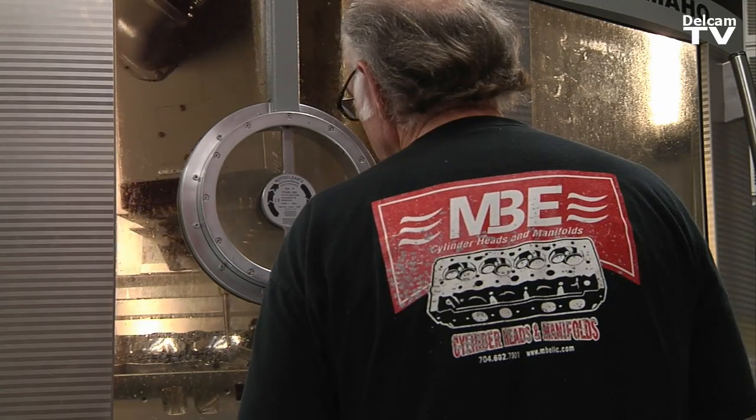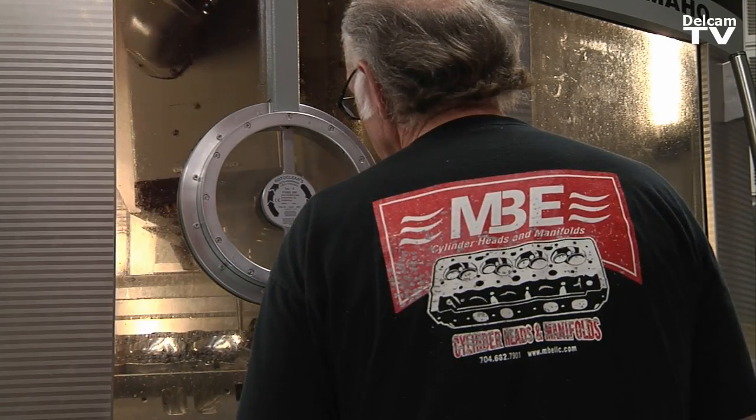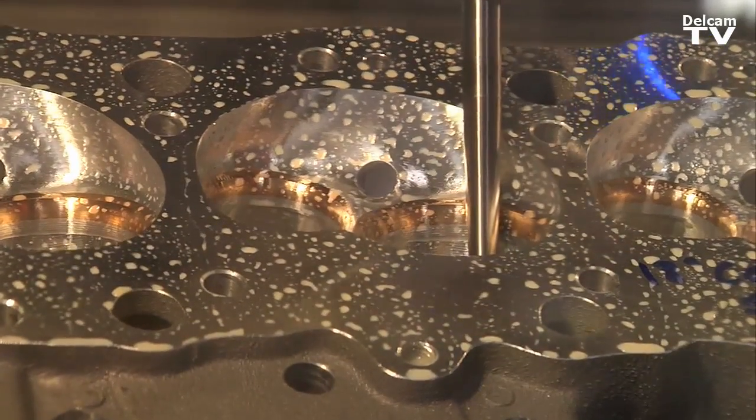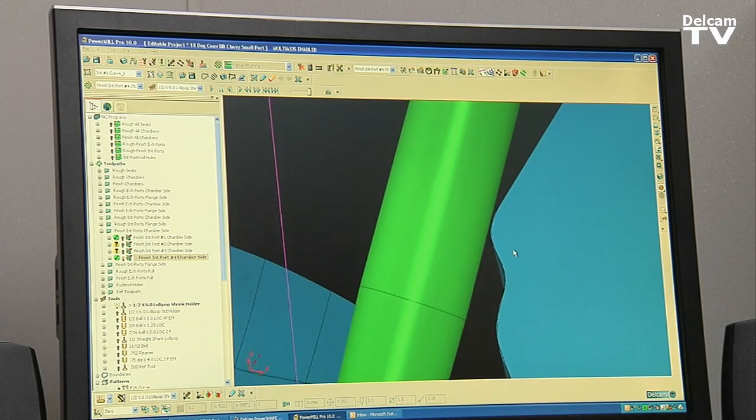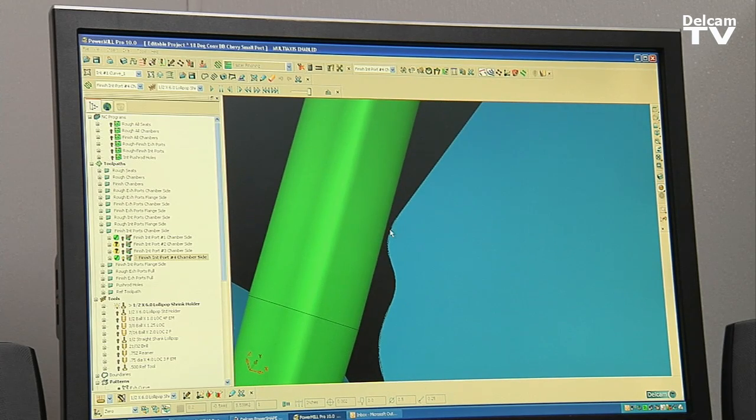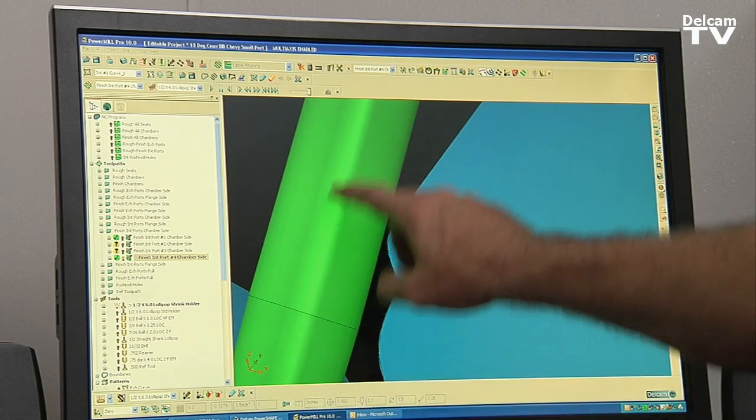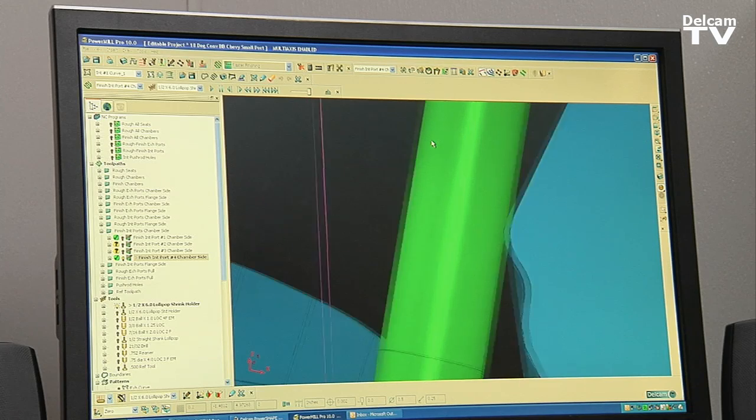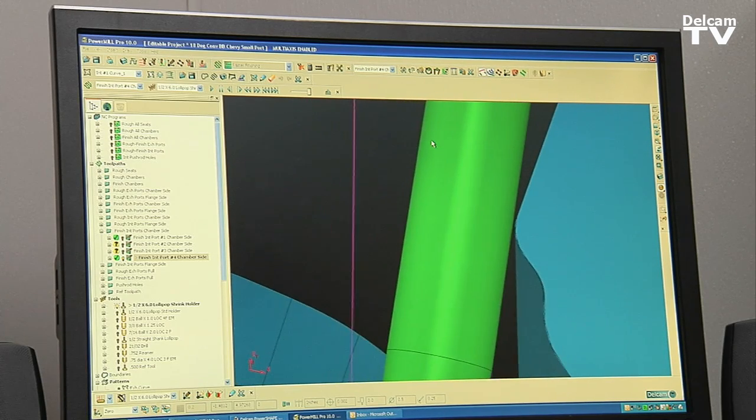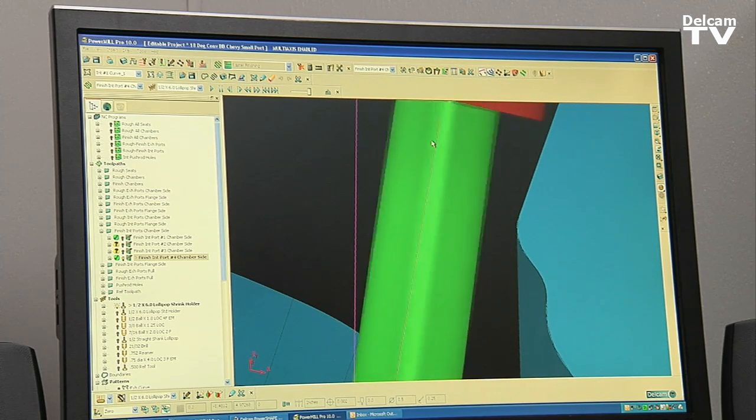One of the features I found with Delcam PowerMill is that it sees models when it's creating a tool path. A good example is if I zoom in here, you can see a very small gap between what we call the ledge plate and the tool shank. If I let the tool move around, you can see it goes around that ledge plate. I put about 15 thousandths away from that ledge plate.